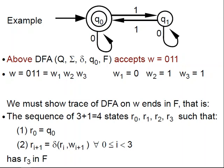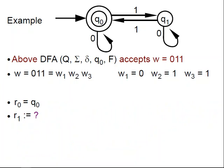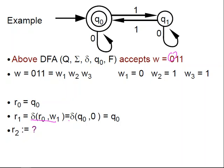That is, I want the sequence of 3 plus 1, 4 states, r0, r1, r2, r3, such that the first one is the start state, and then every next state is obtained from the previous one by reading the corresponding symbol in the input and applying δ, and the last state has to be in F. So let's look at this trace. r0 is q0. What is r1? r1 is δ(r0, w1). w1 is just the first symbol, which is a 0, so δ(q0, 0), which is q0.